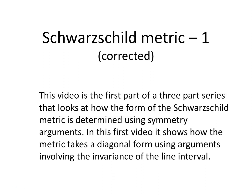This video is the first part of a three-part series that looks at how the form of the Schwarzschild metric is determined using symmetry arguments. In this first video it shows how the metric takes a diagonal form using arguments involving the invariance of the line interval. This is an updated version of the original first video in the series, where I've added the c's back into terms where I previously took them out for visual simplicity — but as a viewer pointed out, they should be included.